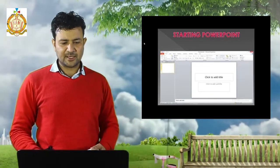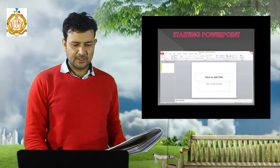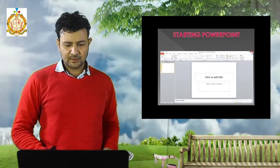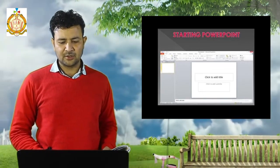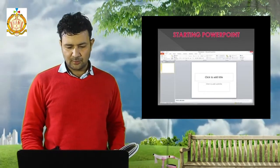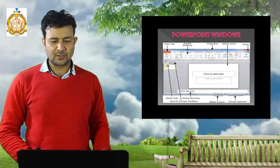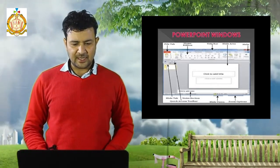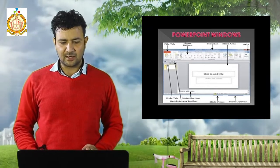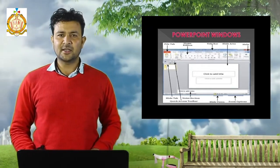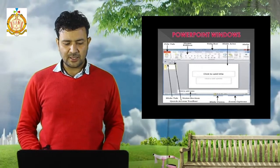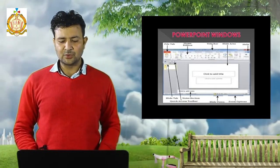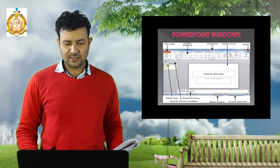When you follow these steps, you will get a screen with one slide where you can click on the slide title or on the subtitle and put whatever you want. In the PowerPoint window there are different buttons: file tab, home ribbon, title bar, slide area, help, slide tab, Quick Access Toolbar, slide view, and zoom option.